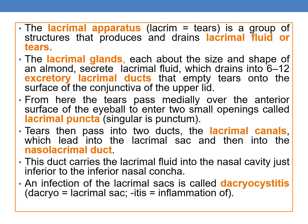The lacrimal apparatus is a group of structures that produce and drain lacrimal fluid and tears. The lacrimal glands, each about the size and shape of an almond, secrete lacrimal fluid which drains into 6 to 12 secretory lacrimal ducts that empty tears onto the surface of the conjunctiva of the upper eyelid. From here, tears pass medially over the anterior surface of the eyeball to enter two small openings called lacrimal puncta, and then pass into the lacrimal canals, which lead into the lacrimal sac and then into the nasolacrimal duct.